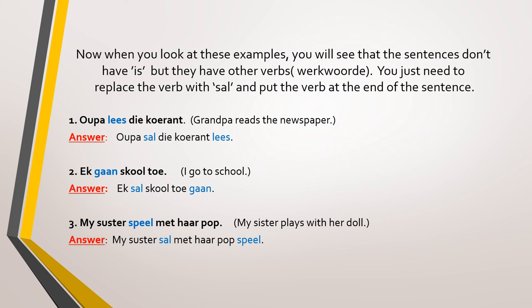Number two: ek khaan school cho — I go to school. Sal takes the place of khaan, so: ek sal school cho khaan. The verb goes to the end. Number three: my sister spiel made her pop — my sister plays with her doll. The answer: my sister sal made her pop spiel. Sal took the place of spiel and spiel went to the end of the sentence because that's the verb.